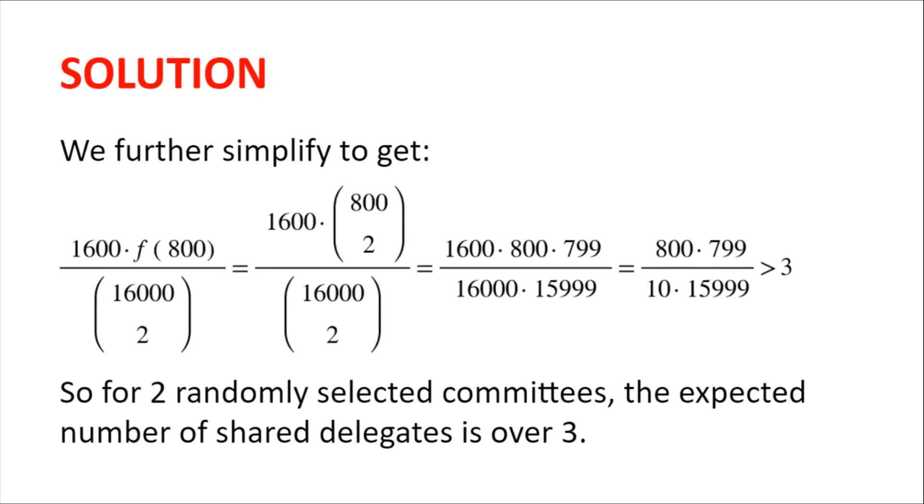We further simplify this to get 1600 multiplied by 800 choose two divided by 16,000 choose two, which is 1600 multiplied by 800 multiplied by 799 divided by 16,000 multiplied by 15,999.